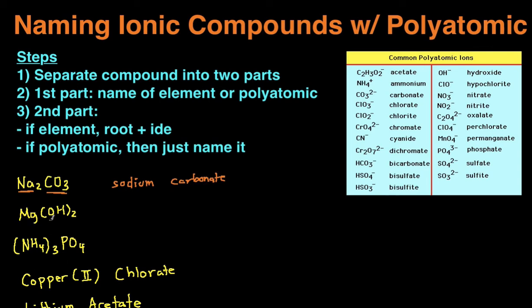So next example, Mg(OH)2, first step separating the two parts. First part's going to be Mg, second part's OH from this polyatomic ion. First part, we just name the element or the polyatomic ion. Mg is just magnesium. And then second part, because this is a polyatomic ion, we just name that and OH is hydroxide. So the name for Mg(OH)2 is magnesium hydroxide.